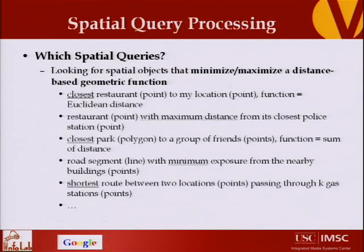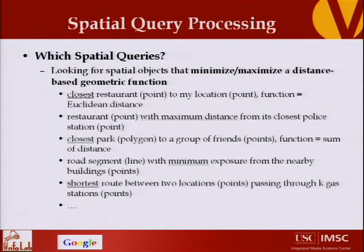Or let's say I have a database of the location of restaurants in an area and the location of all police stations in that area. Give me the restaurant with the maximum distance to its closest police station — to see which restaurant is critical because the police station is too far. Or road segments with minimum exposure from nearby buildings. This is something we provide for the 3D model — let's say a president is going from point A to point B; give a route with minimum exposure from the top of the buildings.